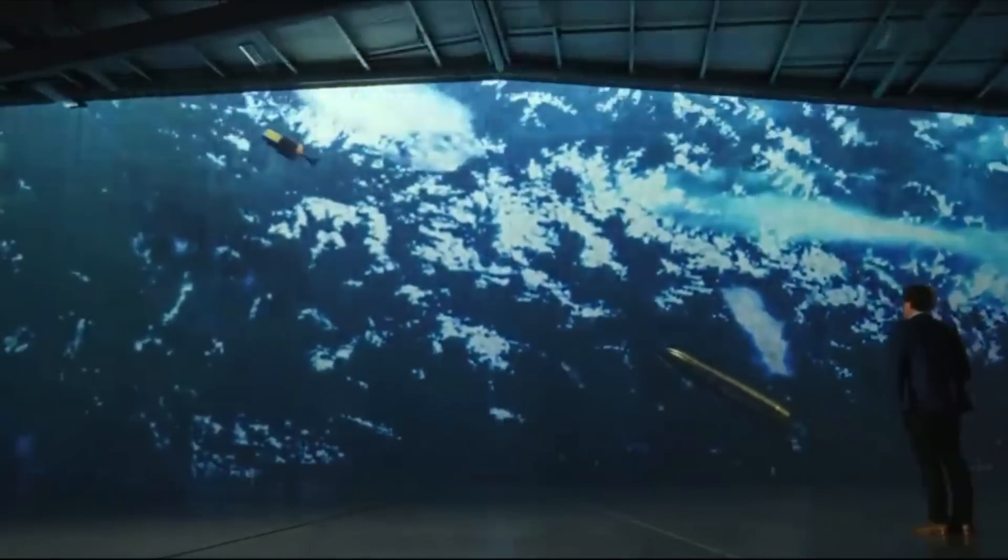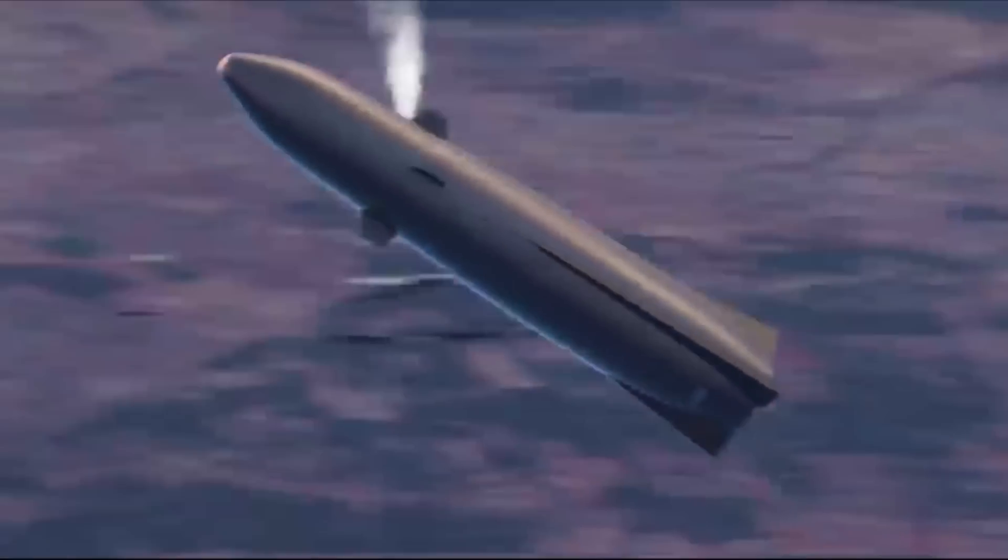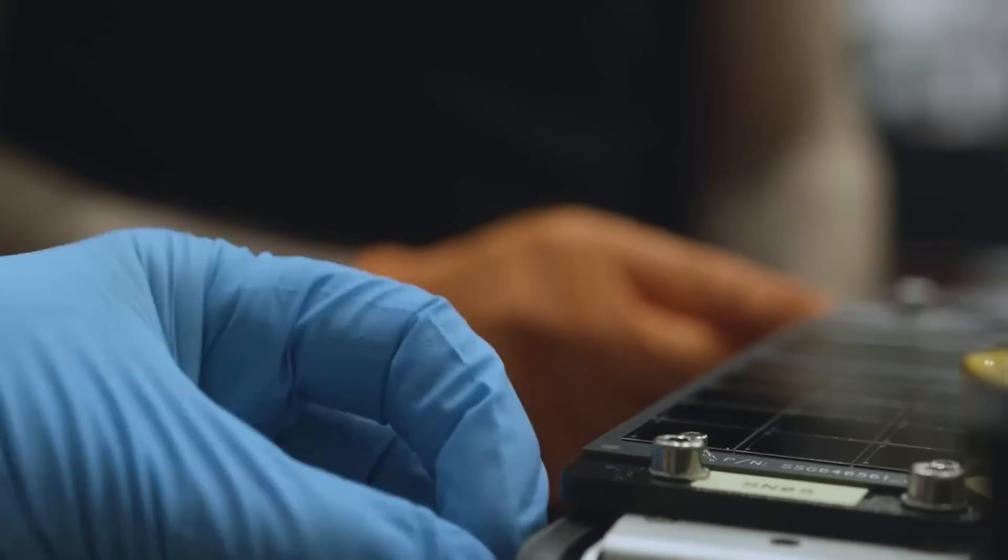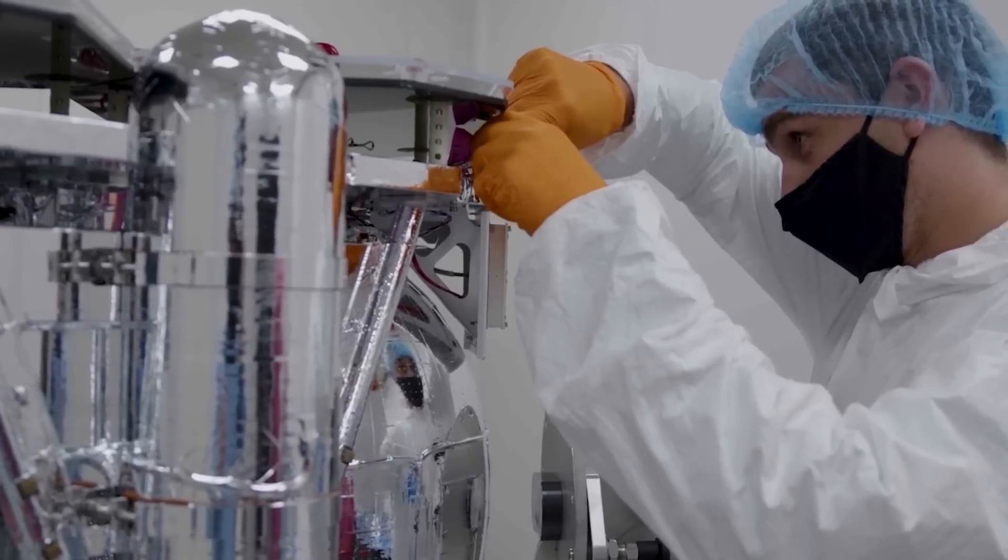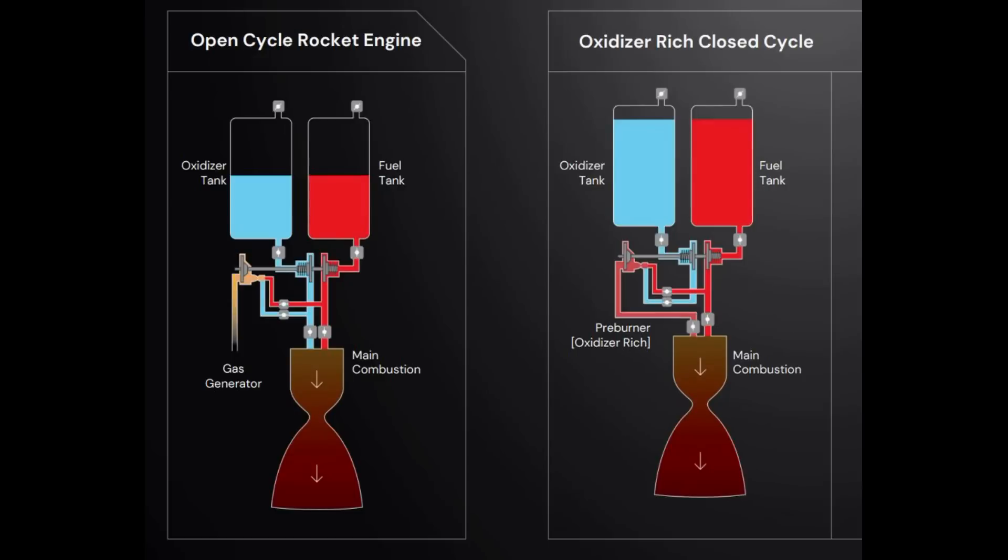He stressed that the engine is going to be reused again and again, and the less stress it goes through, the better. The engine also changed from a gas generator cycle to oxidizer-rich closed cycle. As the company worked through the concept of operations and did all the power balances, they found very high turbine temperatures, not enough margin, and overall the need for a lot of compromises.